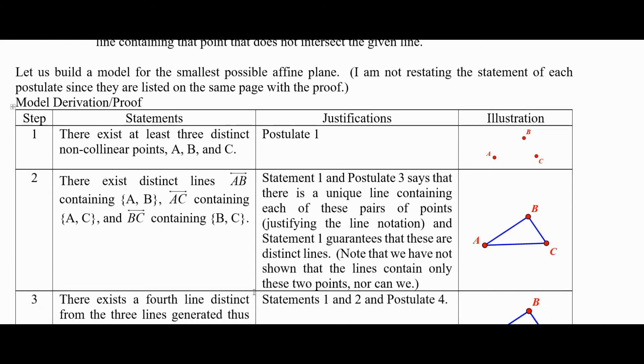There exist distinct lines: the line containing A and B, which contains the set {A, B}. We do not know yet whether that is all there is in that line or whether there might be more. You could say this set is a subset of this line, which is what we mean by containing. Line AC contains the set {A, C} and line BC is the unique line containing B and C.